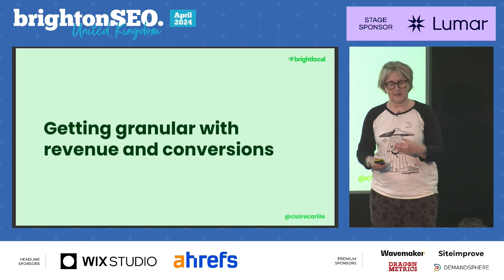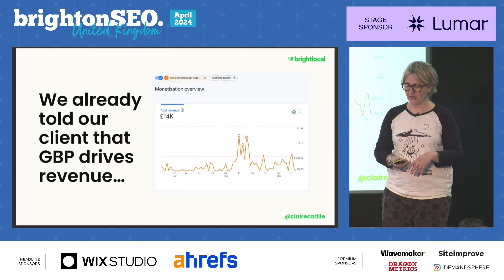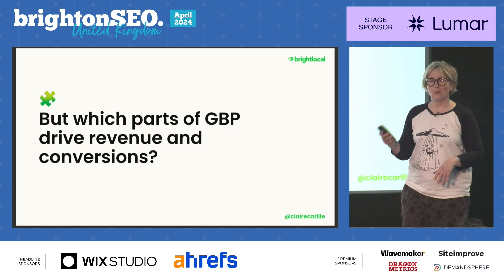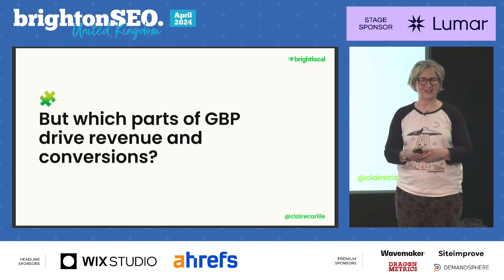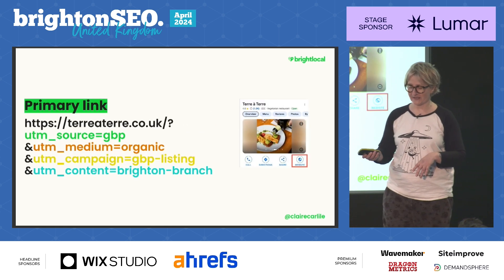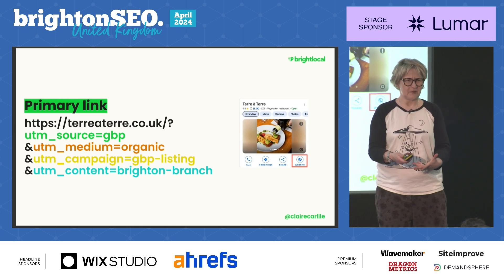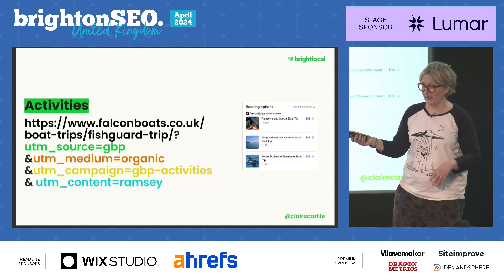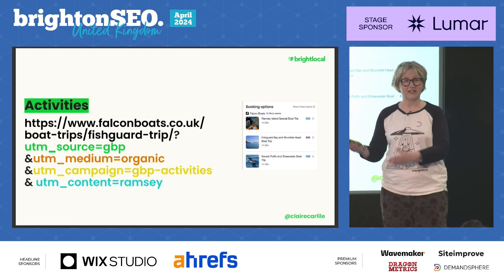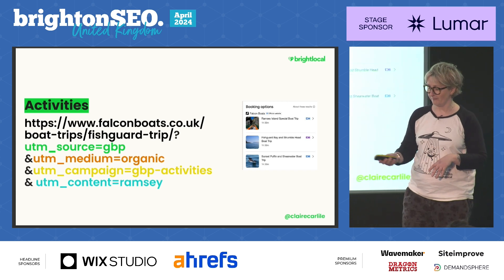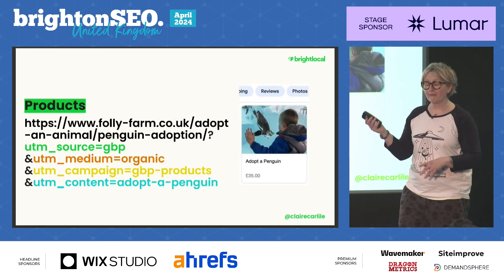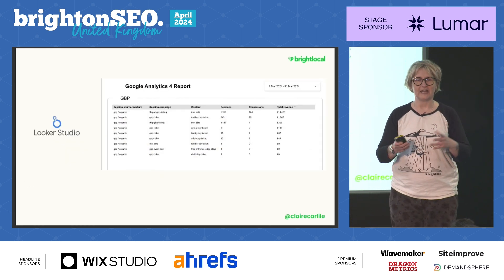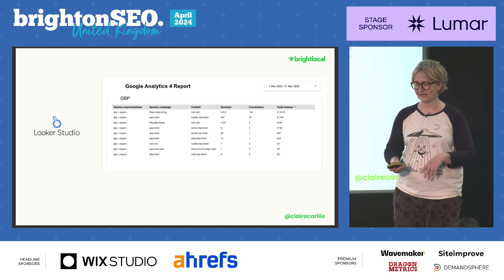We're going to get granular with revenue and conversions. We've told our clients and stakeholders that Google Business Profile is making money, but we haven't told them which parts are driving those revenues and conversions. We've tagged up our links, and with Google Business Profile we can still add quite a lot of links: our primary business link, activities links if you run those, admissions, products, and Google posts. Pull all of that information into a Looker Studio report and you can see what is delivering value.